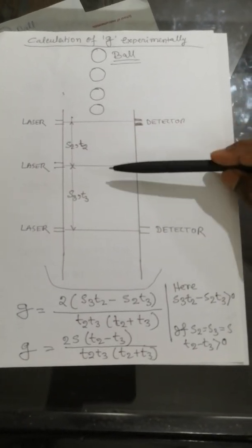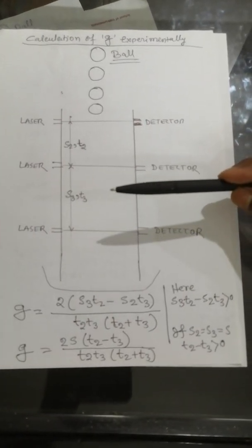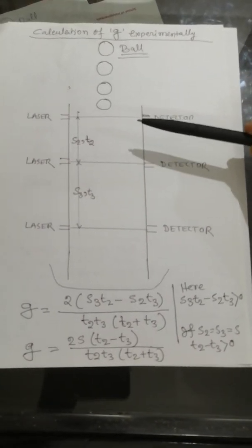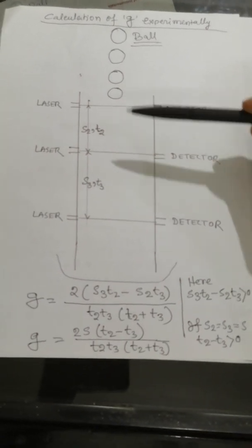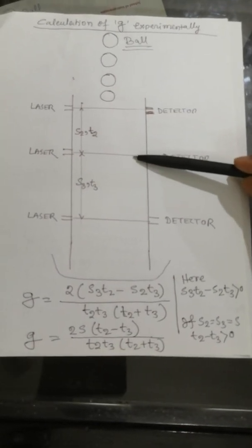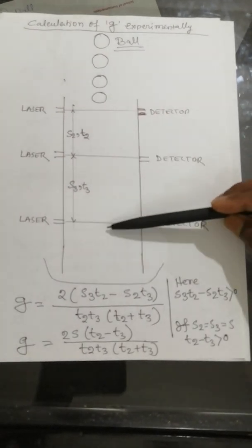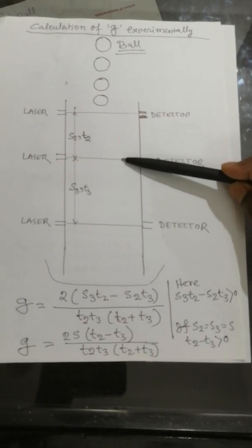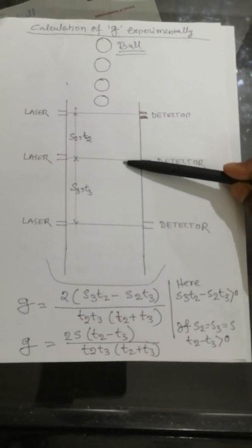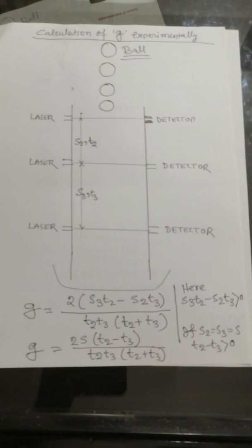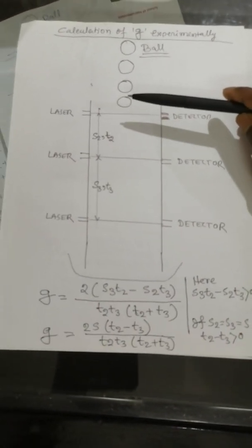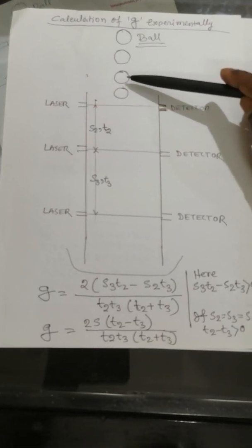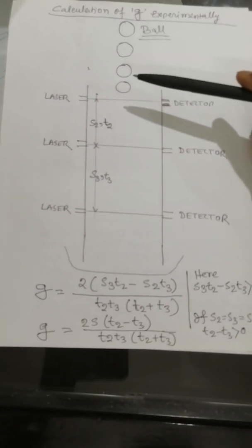In that case, we may take 3 or more than 3 detection points. If we take 3 detection points — suppose this is the first detection point — then the second detection point is at S2 distance and the third one is at S3 distance from the second detection point. If the object is allowed to fall from any position above the first detection point,